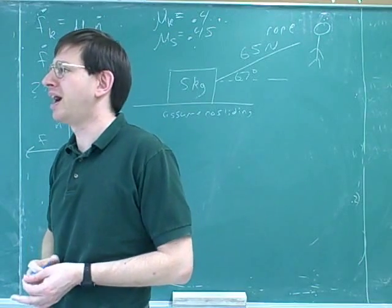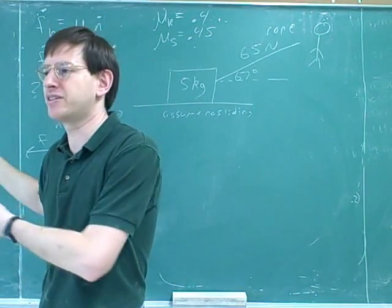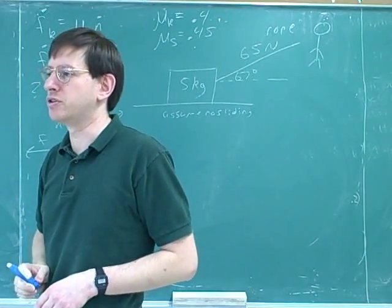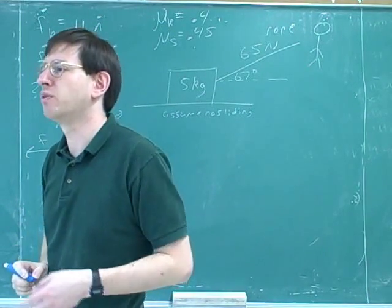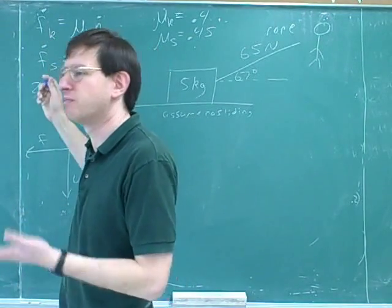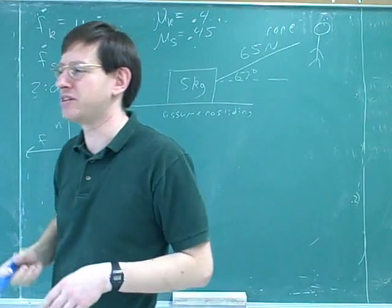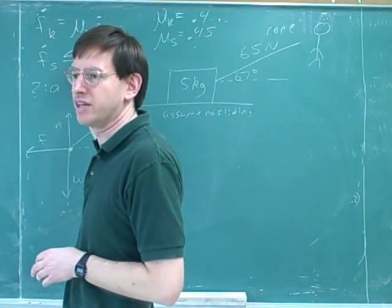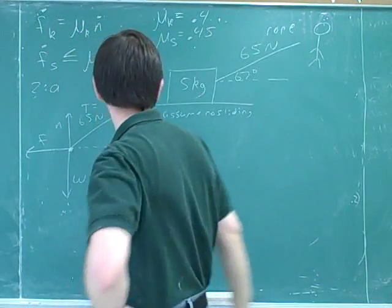For example, you might see a problem like, will an object lose contact with the surface, say. Say, will a roller coaster fall off the track? Well, then you have to decide should you assume that it will or should you assume that it won't. You'll make the assumption that gives you an inequality. For friction, you should assume that it won't slide because that gives you the inequality. There is no inequality for kinetic friction.